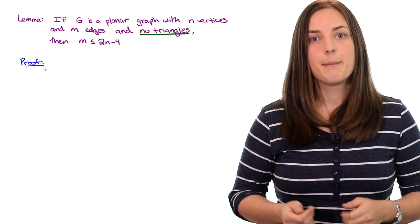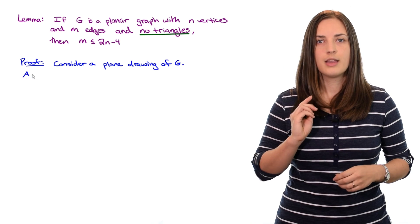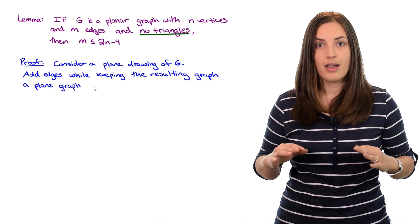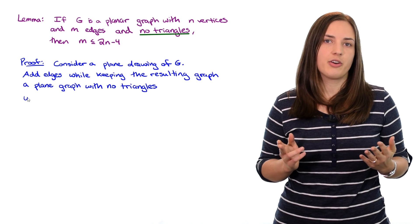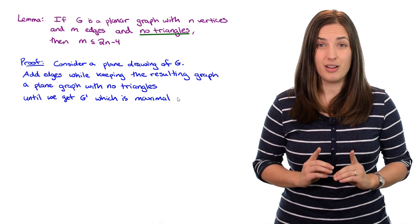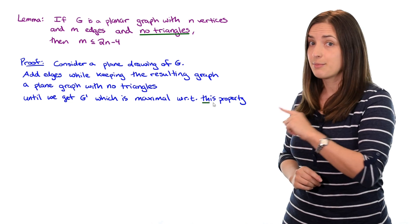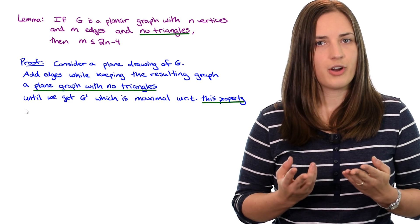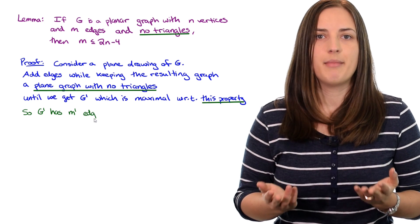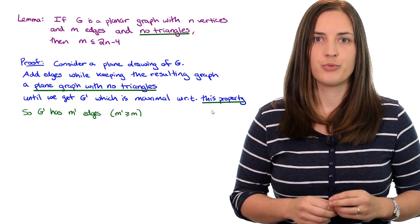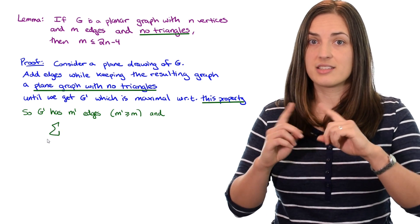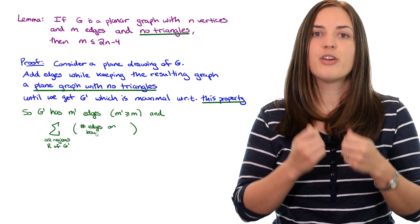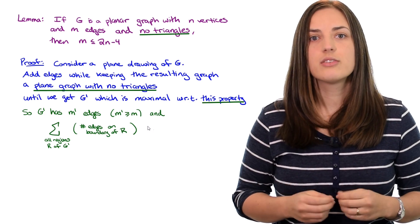Let's start the proof by considering a plane drawing of the graph G. We add edges while keeping the resulting graph a plane graph with no triangles, until we get to a graph G prime which is maximal with respect to this property — meaning it is still a plane graph and has no triangles. The graph G prime has m prime edges, which is at least as big as m.